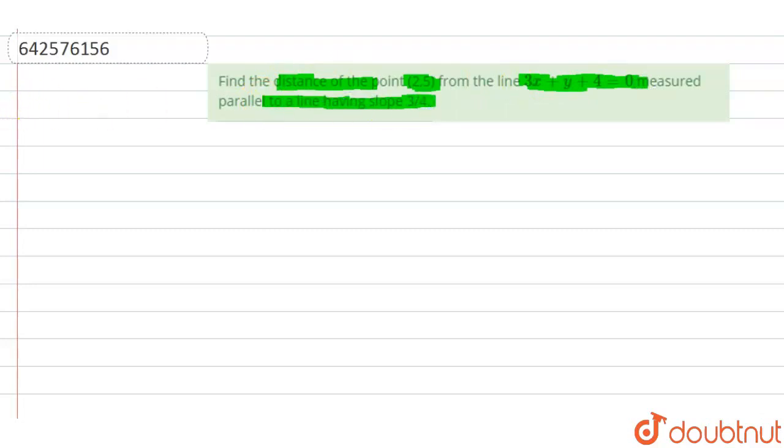Let us understand this graphically. These are the coordinate axes, and we have a line with given slope 3/4.